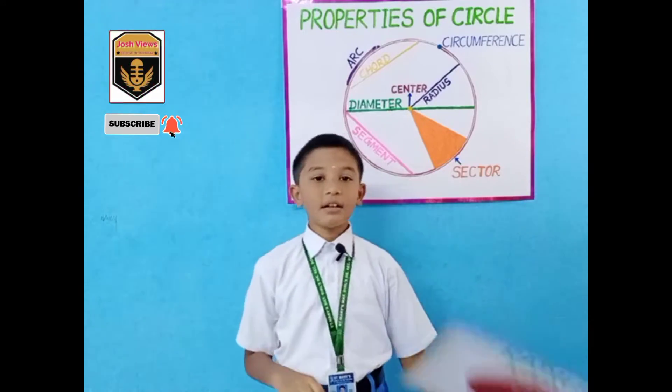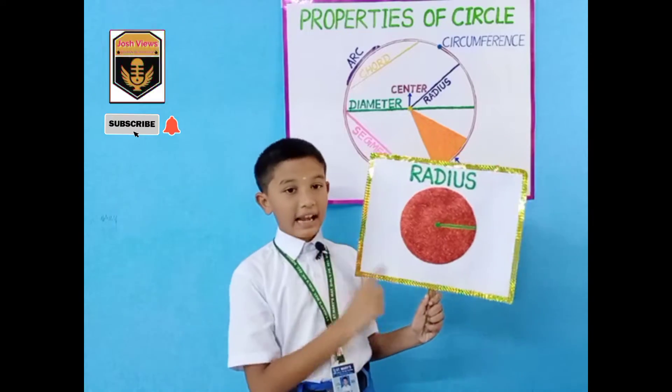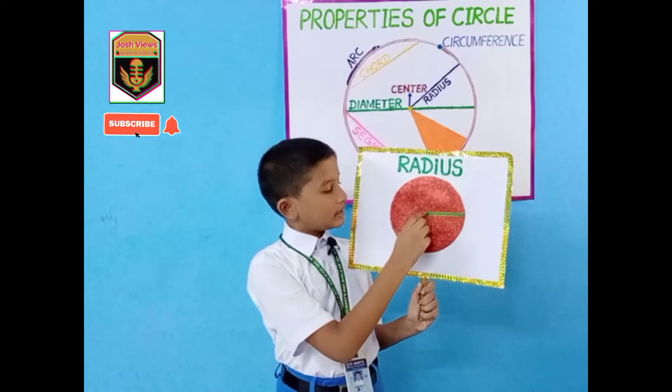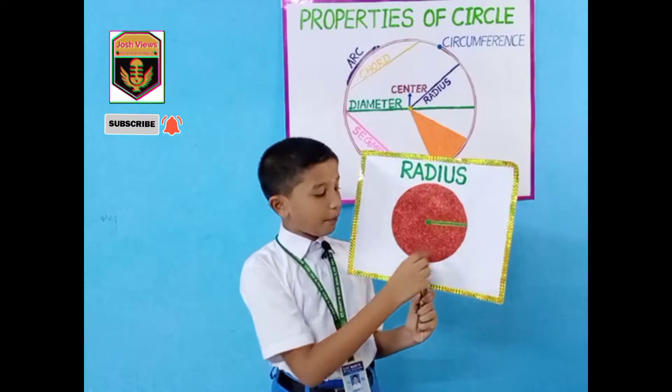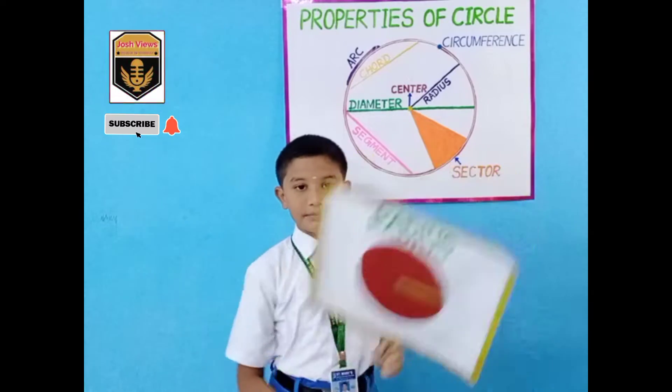Radius. Radius is a line segment drawn from the center of a circle to any point on the circle.